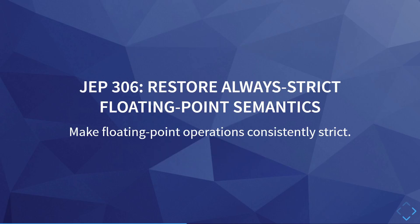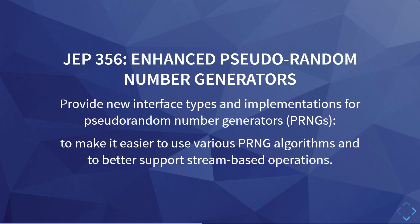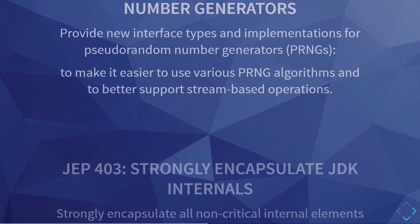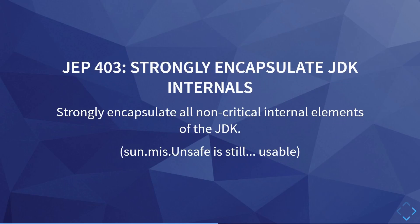Then we have some JEPs that are interesting for more specific use cases. First is JEP 306 — they make floating point operations more consistent. This has to do with some CPUs and how they treat floats differently, or under the hood use a double; they should be more consistent in JDK 17. Then we have JEP 356, which adds new interfaces and implementations for pseudorandom number generators, and they also better support streams. JEP 403 is a continuation of a trend since Java 9 to encapsulate the internal, non-critical APIs of the JDK which devs shouldn't use. SunMisc Unsafe is deemed critical and remains usable until there are proper alternatives.